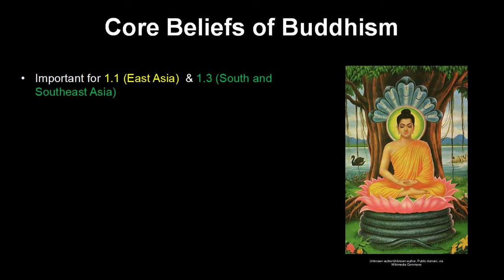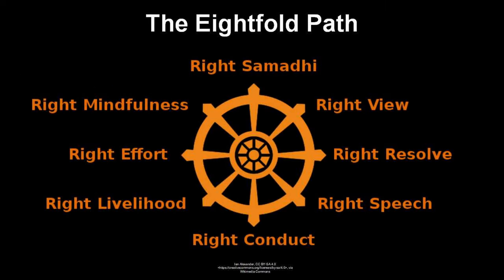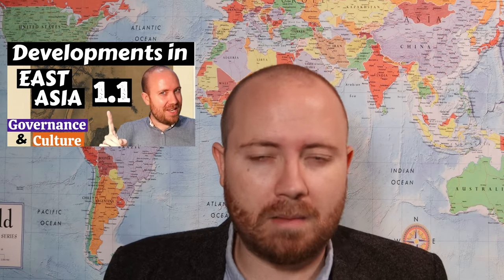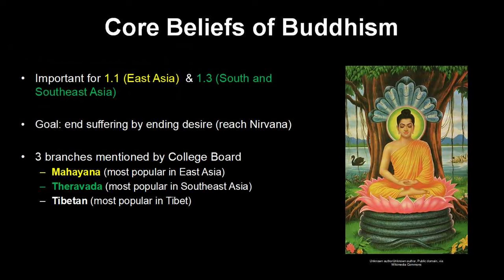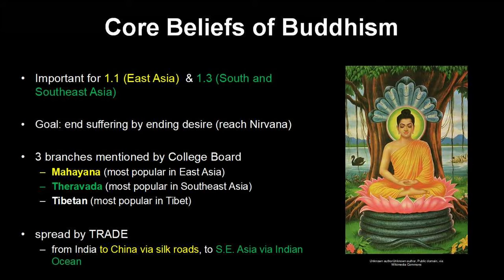The College Board also wants us to know about the core beliefs of Buddhism. To oversimplify, Buddhism's main goal is to end suffering by ending desire, and this can be done by following the Eightfold Path. There are many branches of Buddhism — Mahayana Buddhism is much more popular in East Asia, while Theravada Buddhism is more popular in Southeast Asia. Theravada Buddhism got to Southeast Asia via the Indian Ocean trade routes.